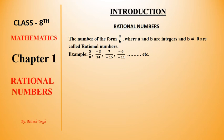If denominator is 0, then you can see all the numbers will be 0. So for Rational Numbers, denominator is not 0. Some examples you can see.